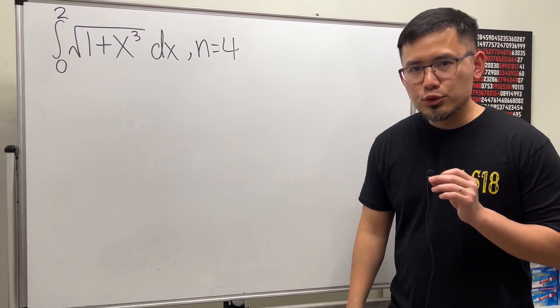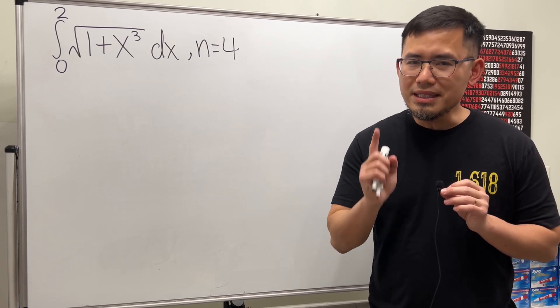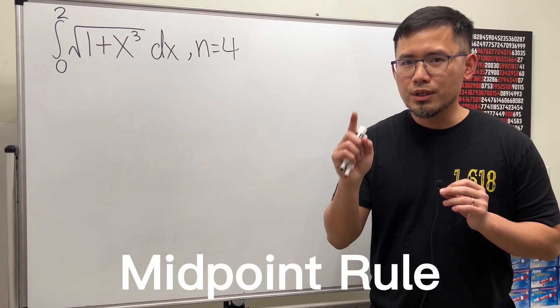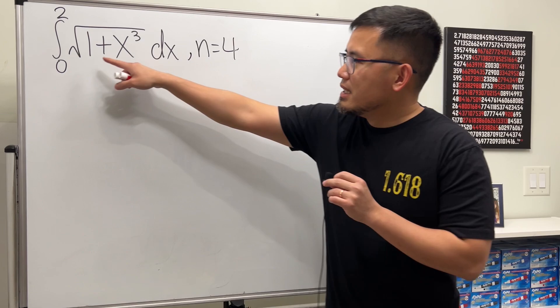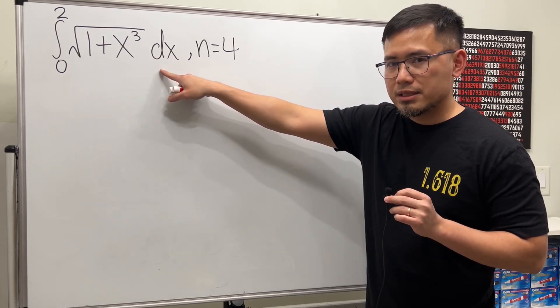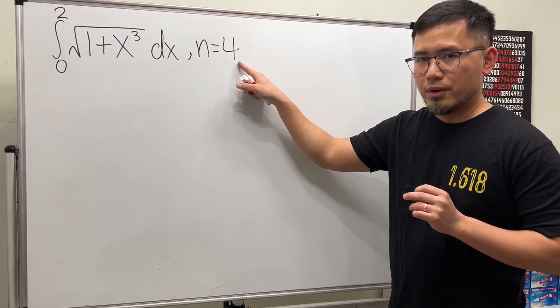Dear calculus students, I would like to show you the easiest way to do the midpoint rule, trapezoidal rule, and the Simpson's rule. Let's say this is the integral that we want to approximate and we have n equal to 4.